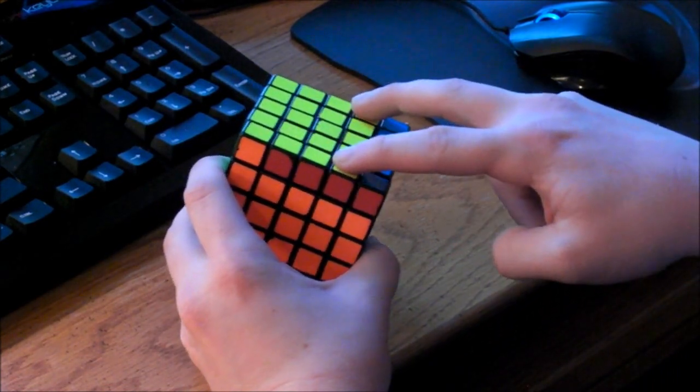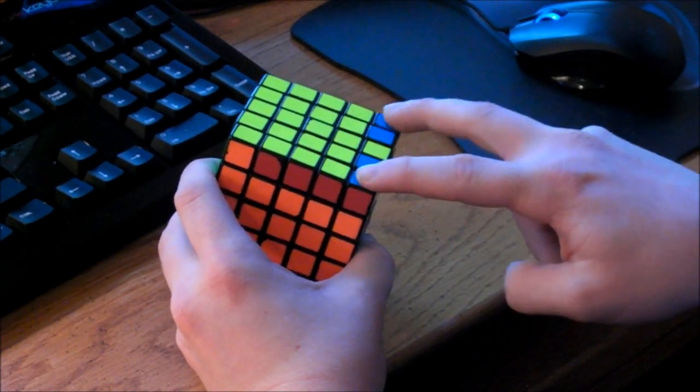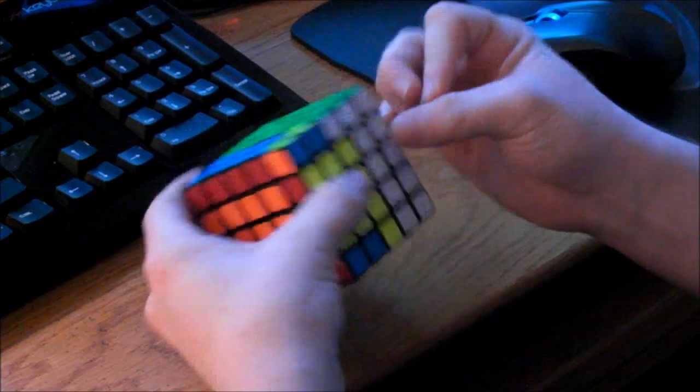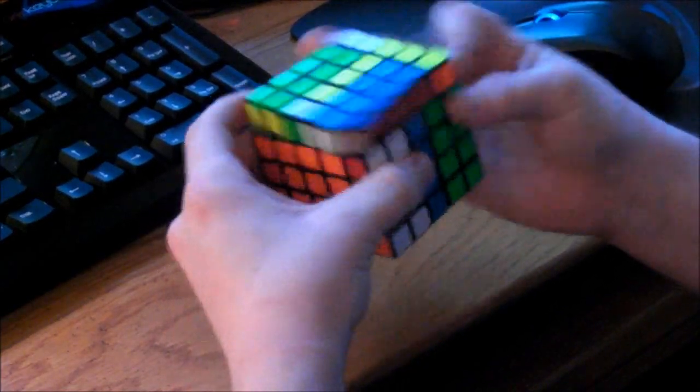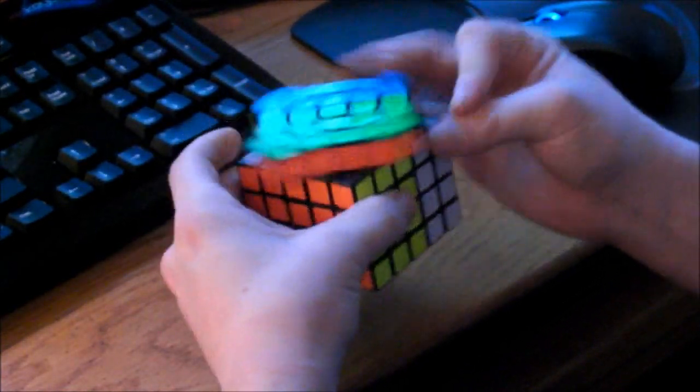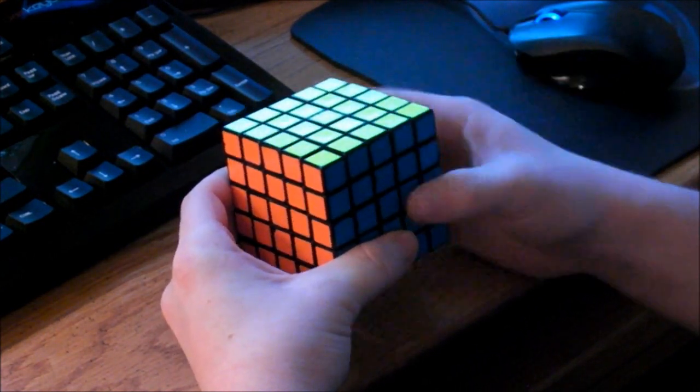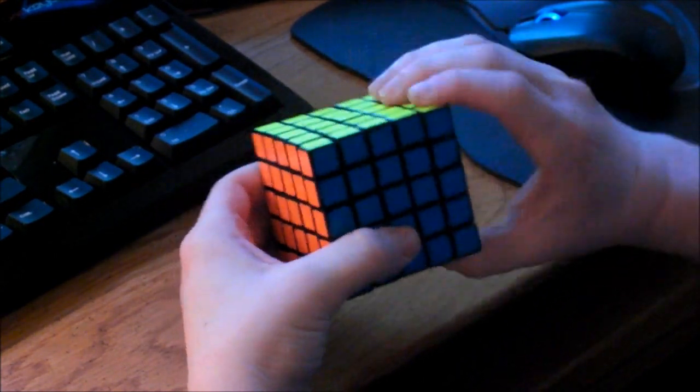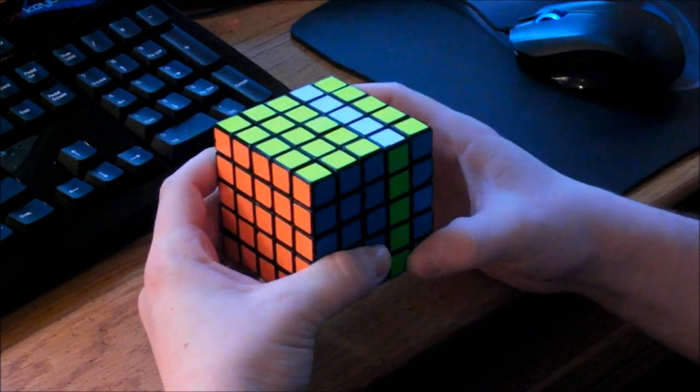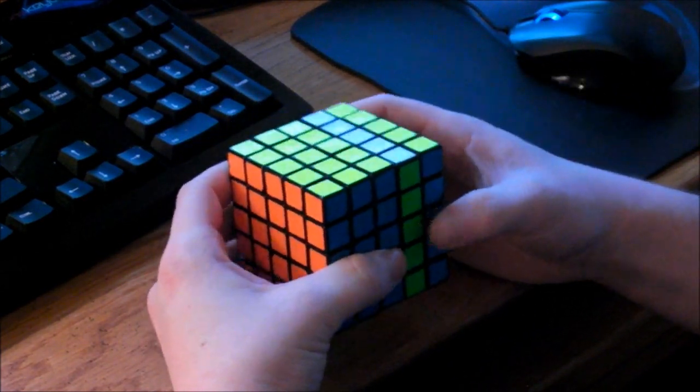And that flips those two. But, like I showed you before, it switches these two edge pairs and these two corners as well. And if you want to do a pure version of that without switching these, of course you can do the inner layer one, but that will take longer and I don't recommend it.